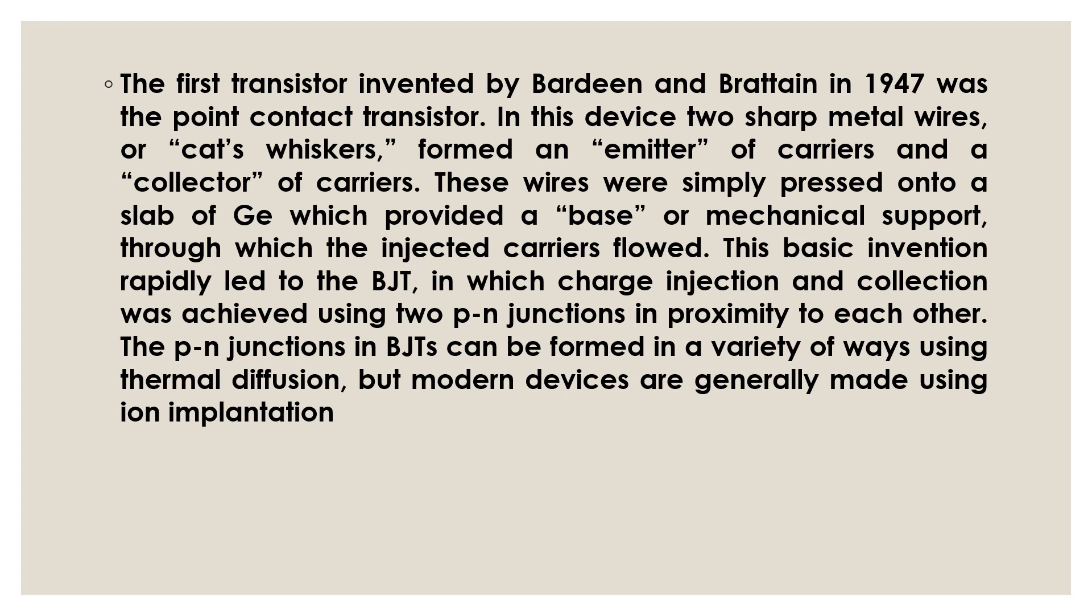The first transistor was invented by Bardeen and Brattain in 1947. In this device two sharp metal wires or cat's whiskers formed an emitter of carriers and collector of carriers. These wires were simply pressed onto a slab of germanium which provided a base or mechanical support through which the injected carriers flowed. The basic invention rapidly led to the BJT in which charge injection and collection was achieved using two PN junctions in proximity to each other. The PN junctions in BJT can be formed in a variety of ways using thermal diffusion.